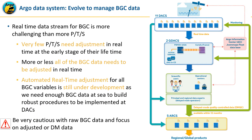What is different between BGC and the core mission is that the real-time data stream for BGC is even more challenging than the one developed for temperature and salinity. While very few pressure, temperature, and salinity measurements need adjustment in real-time at the early stage of their lifetime, nearly all BGC data needs to be adjusted in real-time. An automated real-time adjustment for all BGC variables is still under development, as we need enough BGC data at sea to build a robust procedure to be implemented within the 11 DACs. So be cautious with raw BGC data and focus on adjusted or delay mode data in your application.